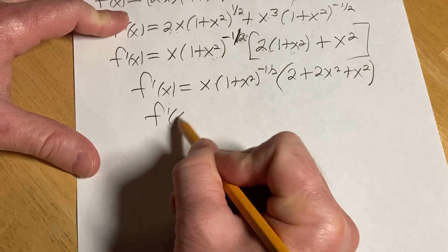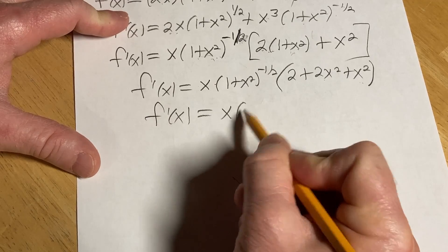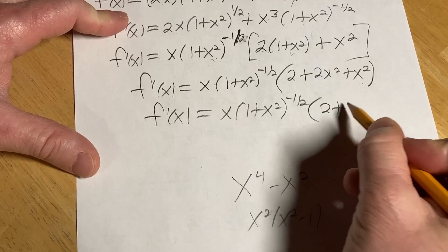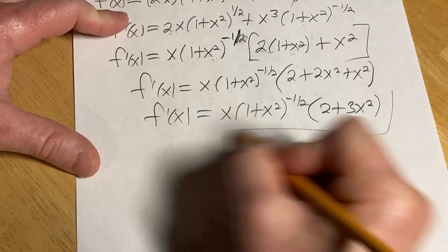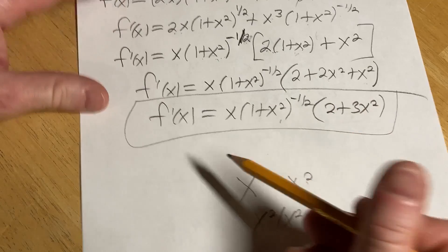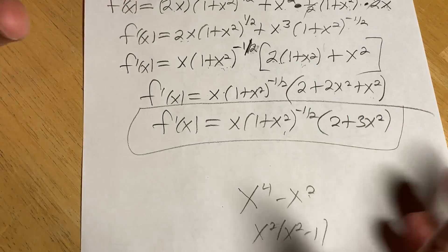So f prime of x equals x times 1 plus x squared to the negative 1 half times 2 plus 3x squared. You can leave it like this. Or you can bring this back downstairs and turn it into a square root if you like. It doesn't really matter. I'm just going to leave it like this because this is perfect.